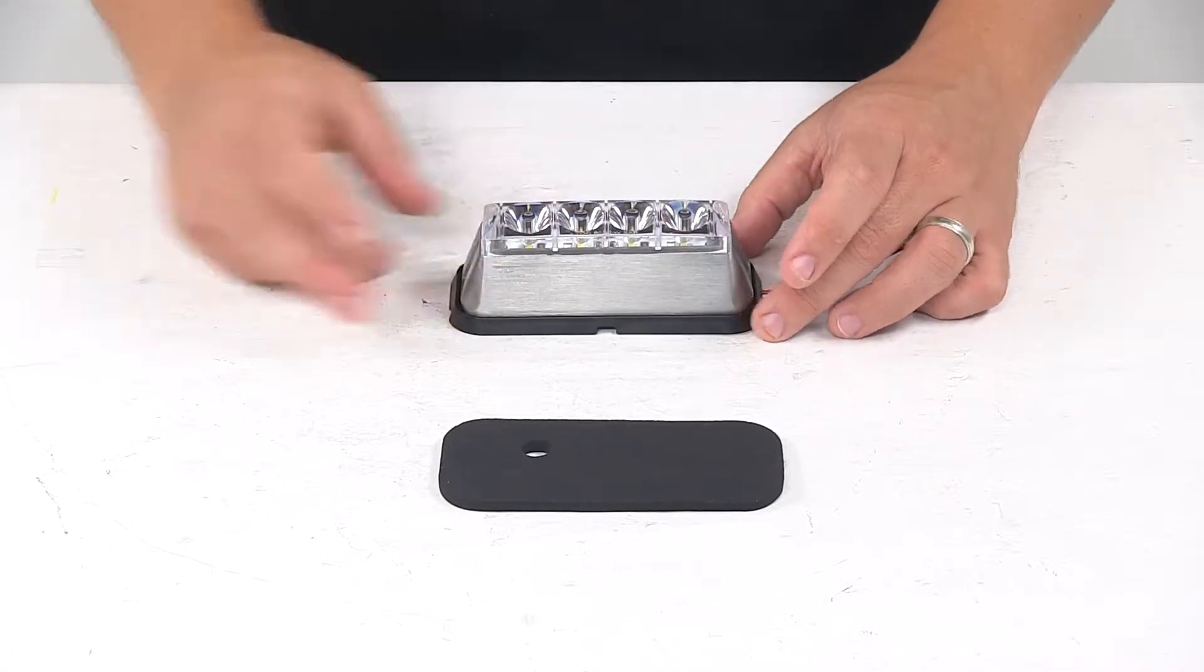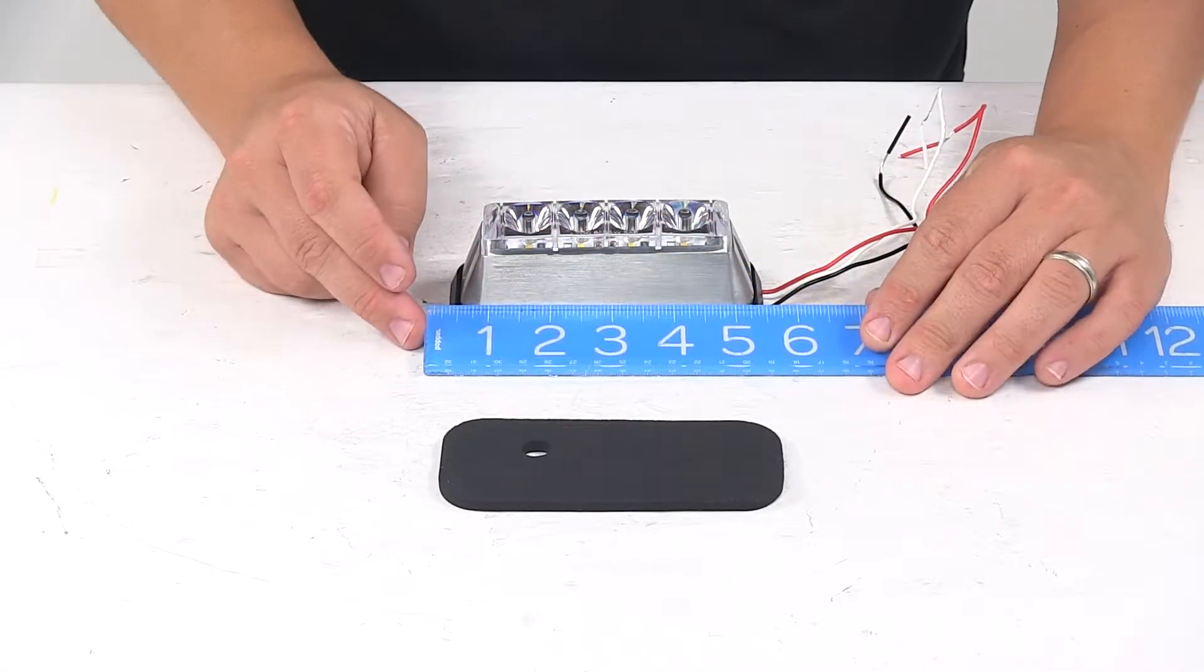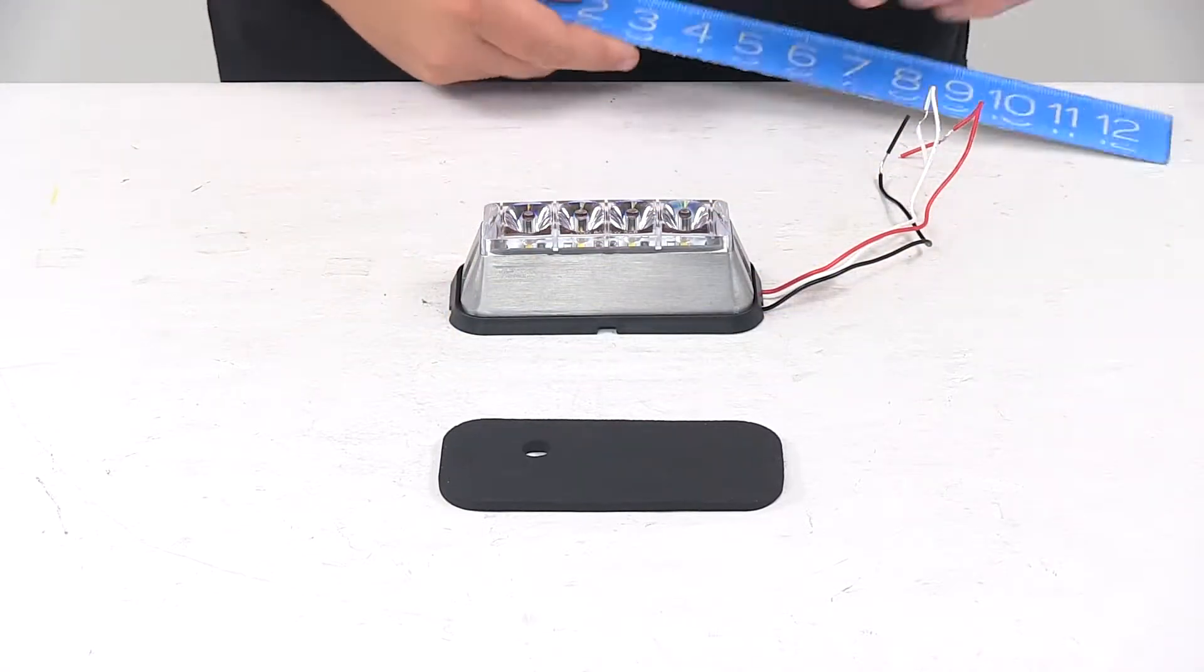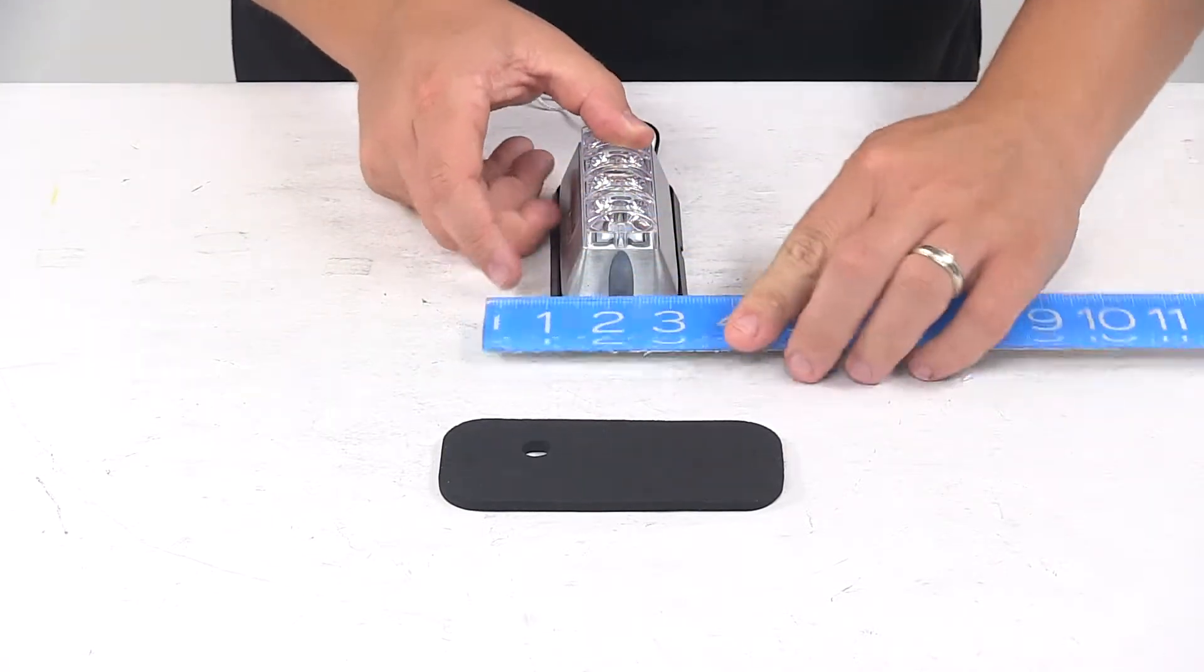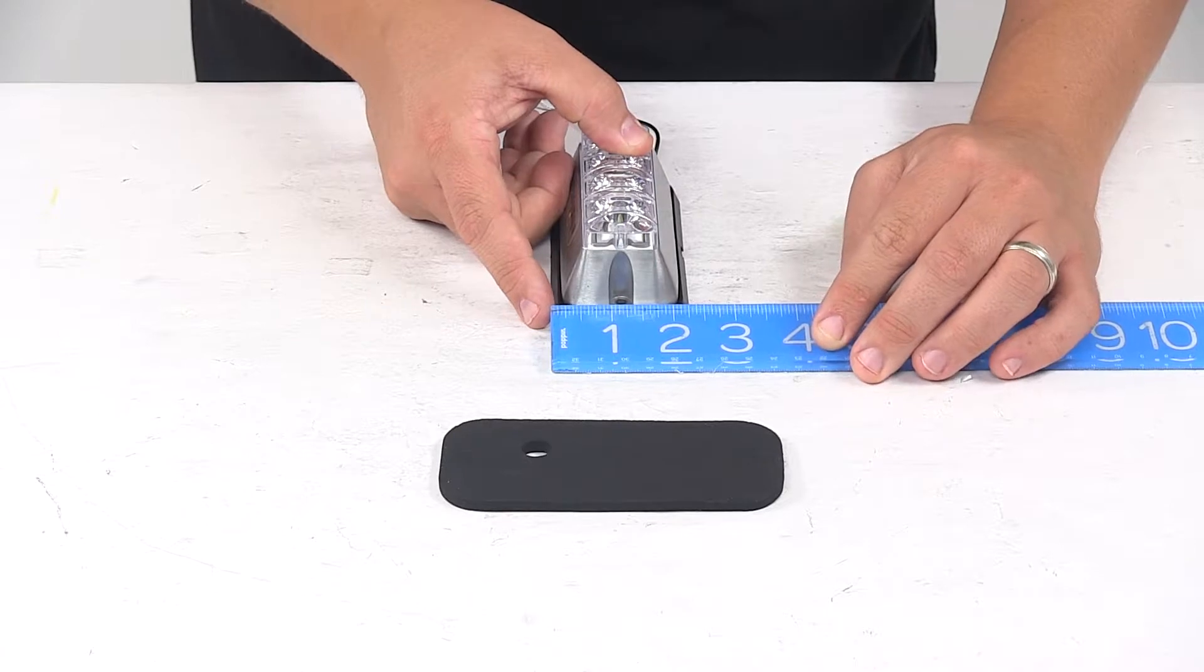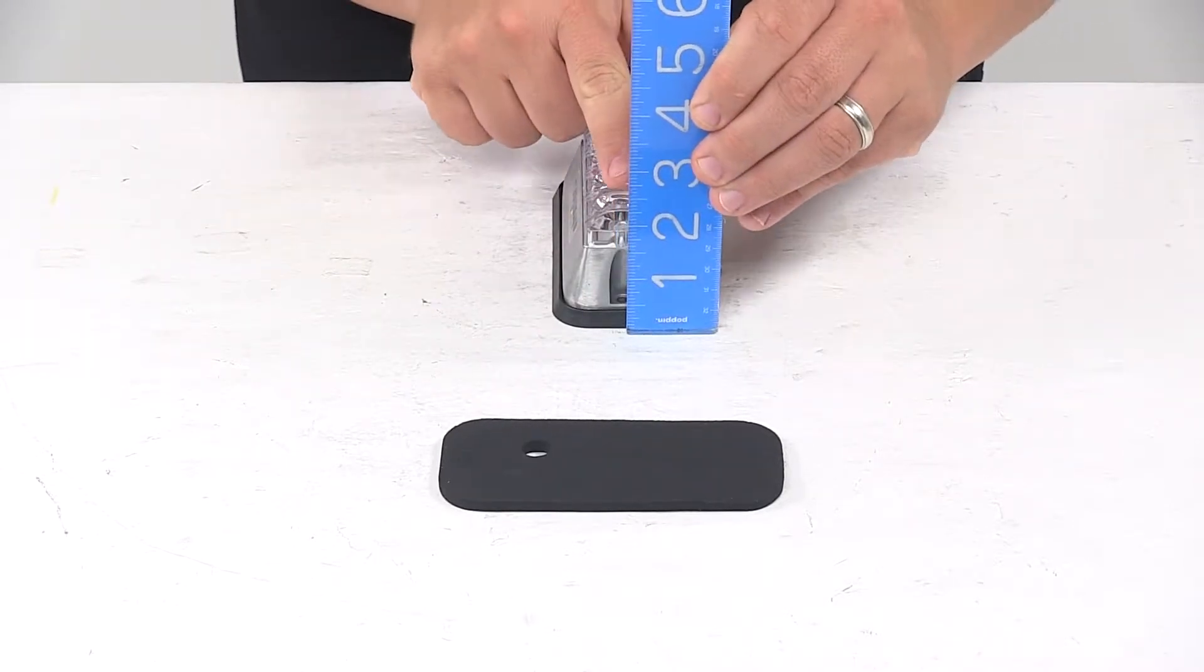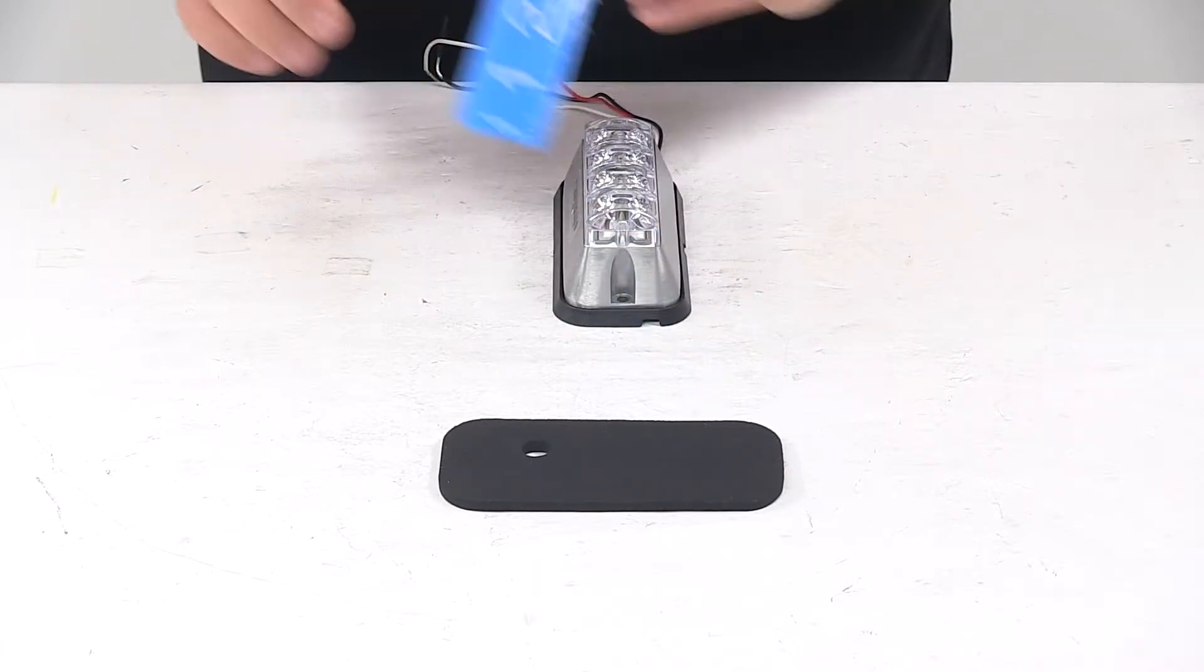When it comes to the dimensions, going edge to edge this direction, we're looking at about five and one quarter. I'm doing the overall measurements with it on the base. Edge to edge going this direction is about two and five sixteenths. And then the overall depth or overall height is about one and thirteen sixteenths inches.